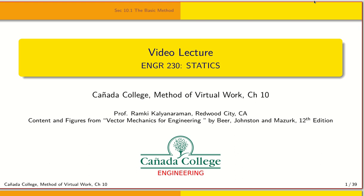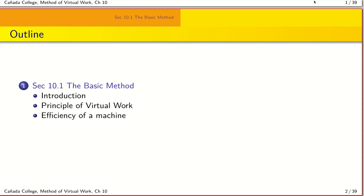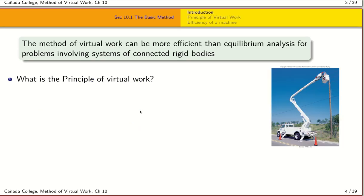Today we will wrap up the content for this class by talking about the method of virtual work, which is in section 10.1 of chapter 10. We'll begin with an introduction of what virtual work means, then introduce the principle of virtual work, and solve some example problems. This method is more efficient than conventional equilibrium analysis, especially in systems involving connections between rigid bodies.